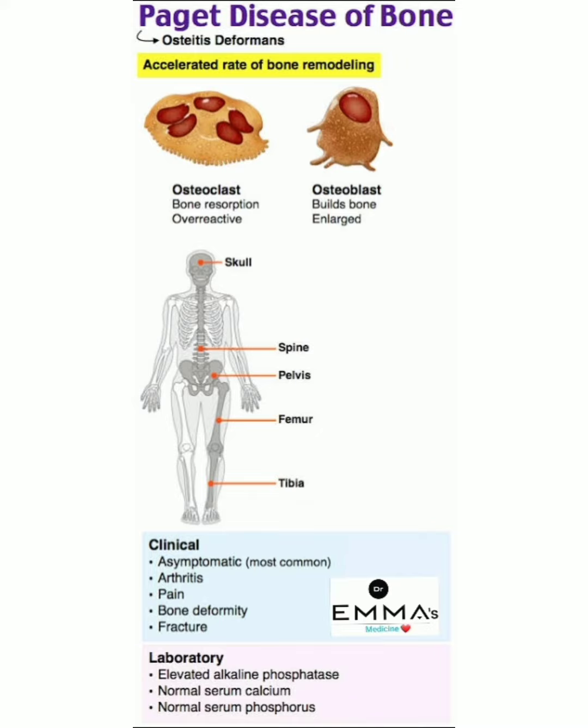If we notice the bones on the image and compare both sides, the skull, spine, pelvis, femur, and tibia are all enlarging in size compared to the other side.